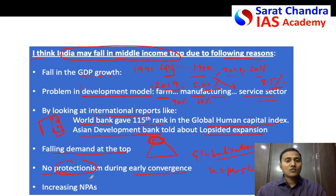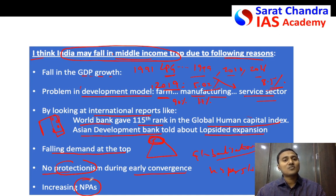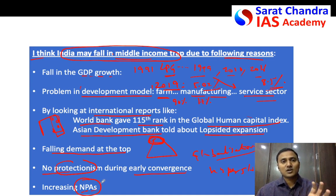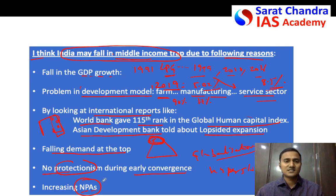One more important point: for the economy to grow, businesses require enough capital, so banks must lend sufficiently. But lending in India has decreased because banks are facing the problem of non-performing assets (NPAs). Because of that, the Indian economy may not grow as well as it was previously. So these are the various reasons for the second part of the question — why India may fall into the middle income trap.